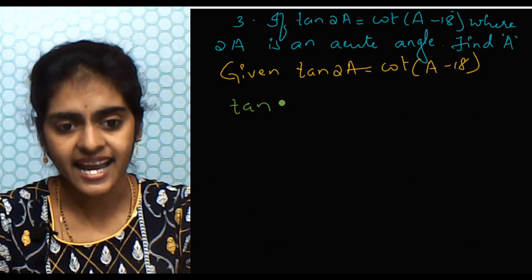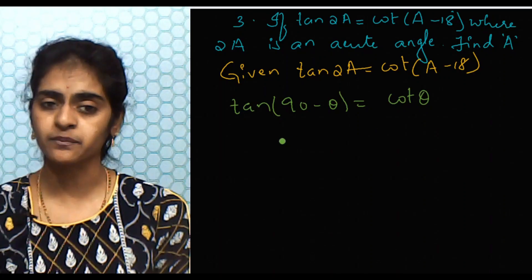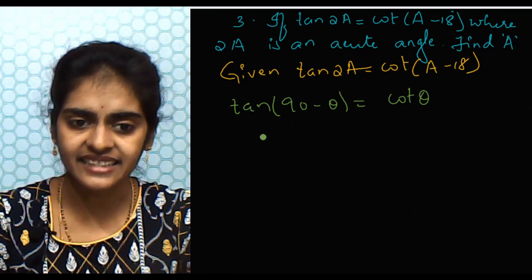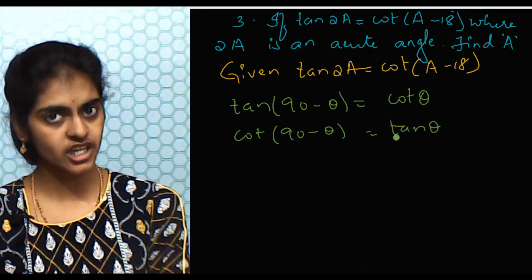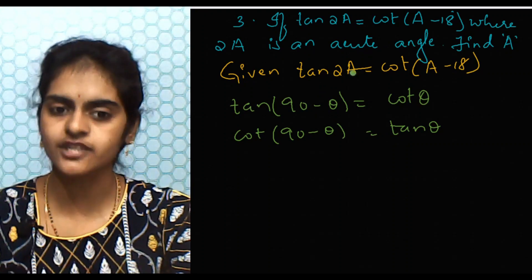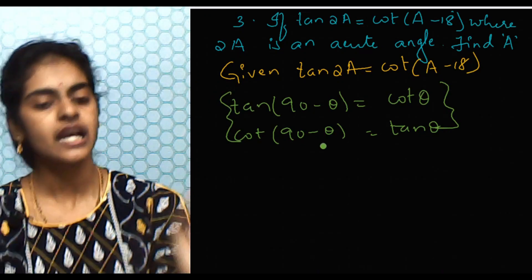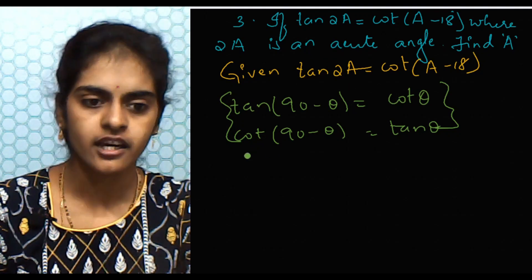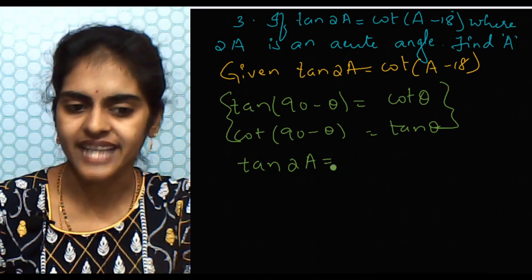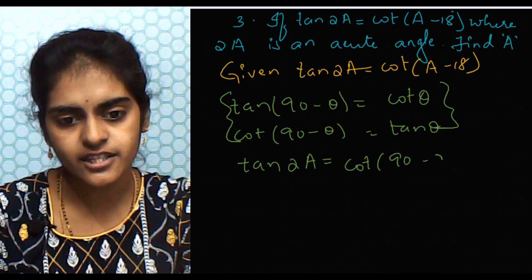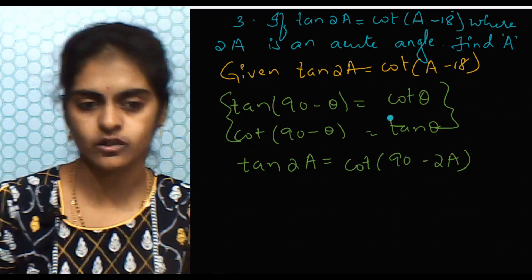We know that tan(90 − θ) = cot θ, and cot(90 − θ) = tan θ. So tan and cot are complementary to each other. You can change either tan or cot using these identities — there are two methods. I'll change tan 2A: using the complementary angle identity, tan 2A = cot(90 − 2A).